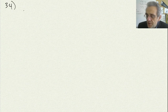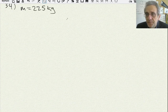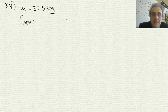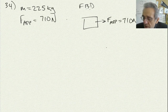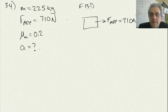Next question is 34. A 225 kilogram crate — so m equals 225 kilograms — is pushed horizontally with a force of 710 newtons. So the applied force is 710 newtons. It says if the coefficient of friction is 0.2, calculate the acceleration of the crate. So μk equals 0.2, and we need to find the acceleration.